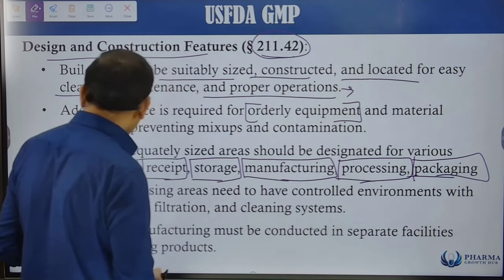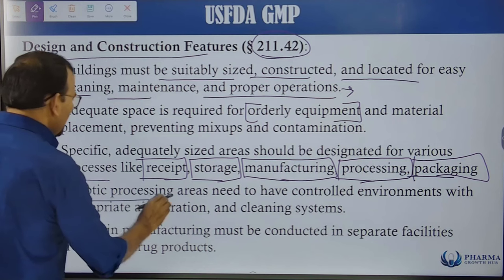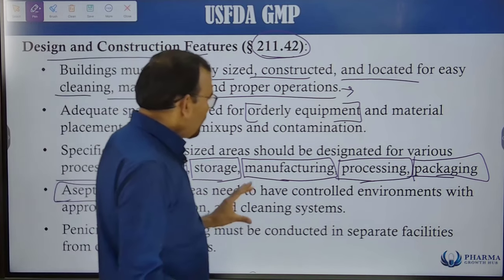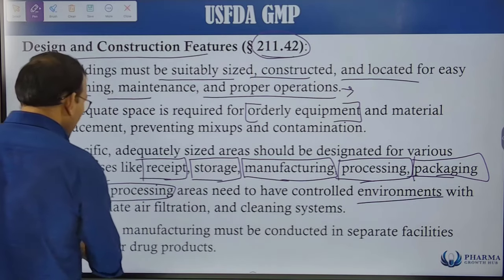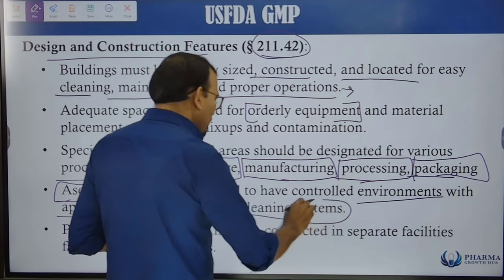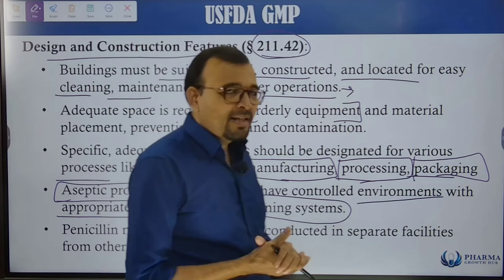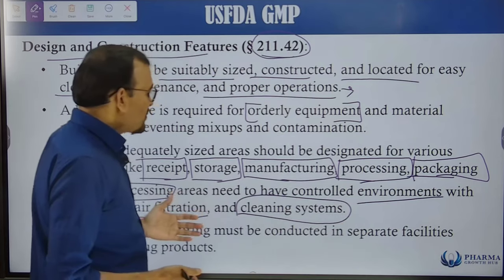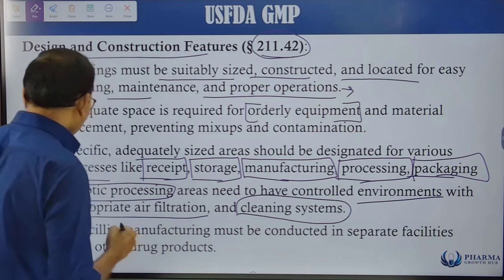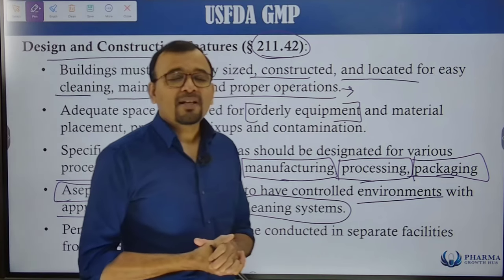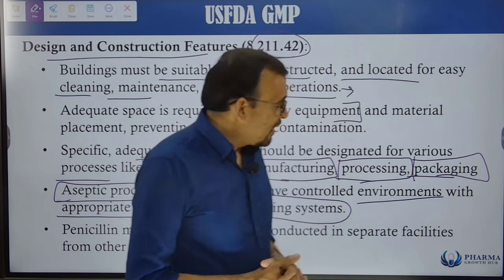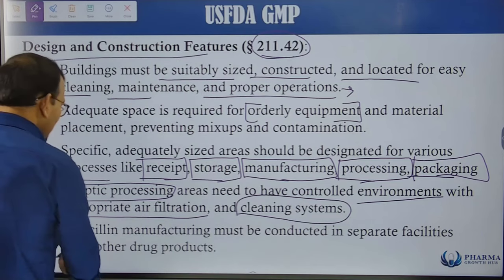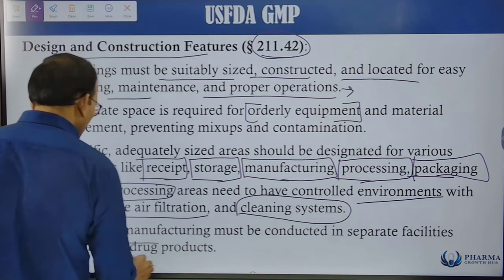Aseptic processing areas — for sterile manufacturing like injectables — need controlled environments with appropriate air filtration and cleaning systems. Environmental controls like temperature, humidity, and cleanliness are required even for non-sterile manufacturing, but for aseptic formulations the norms are much higher, such as Class 100 for sterile manufacturing. Penicillin manufacturing must be conducted in separate facilities from other drug products.